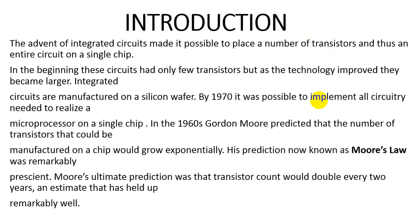The advent of the integrated circuit made it possible to place a number of transistors, and thus an entire circuit, on a single chip. In the beginning, this circuit had only a few transistors, but as the technology improved, they became larger. Integrated circuits are manufactured on a silicon wafer. By 1970, it was possible to implement all circuitry needed to realize a microprocessor on a single chip.